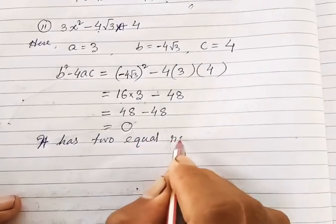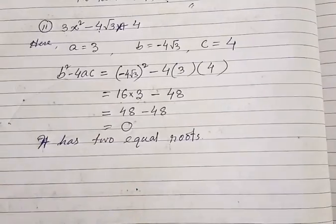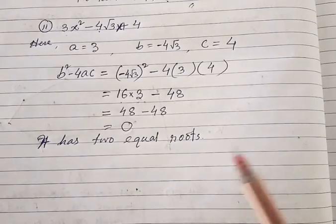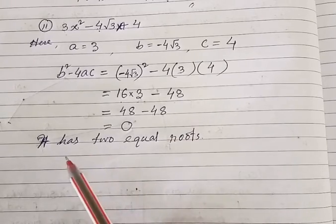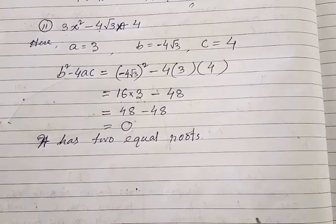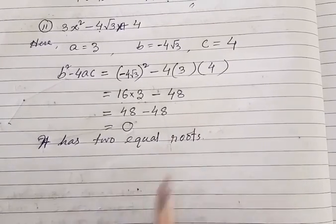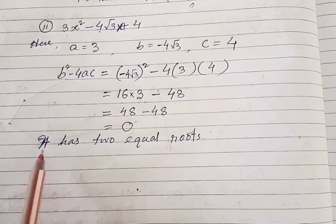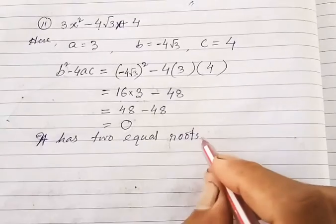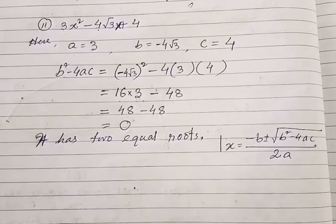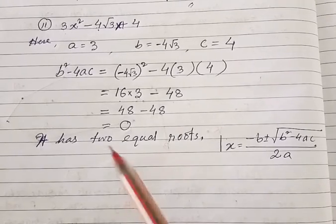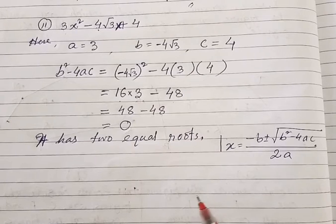The equation has two equal roots. Since it is exists — real roots do exist — we need to find them. We already know it has two equal roots; now we have to find these two equal roots.